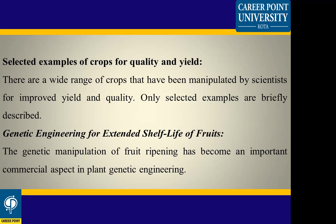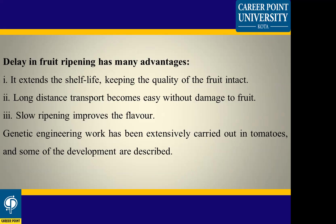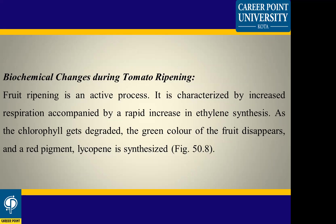Fruit ripening and increasing shelf life while keeping the quality of fruit intact is the most important part of plant engineering. If ripening is slow, the shelf life will increase. Genetic engineering work has been extensively carried out on tomatoes. Fruit ripening is an active process characterized by increasing respiration and a rapid increase in ethylene synthesis.